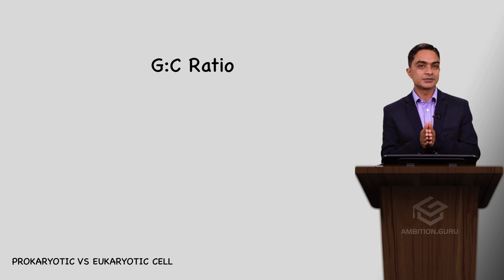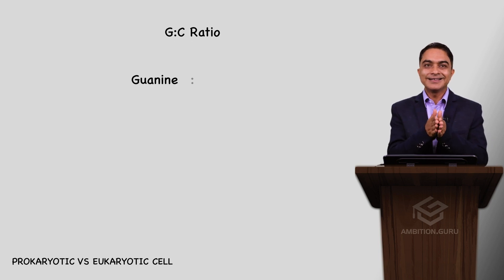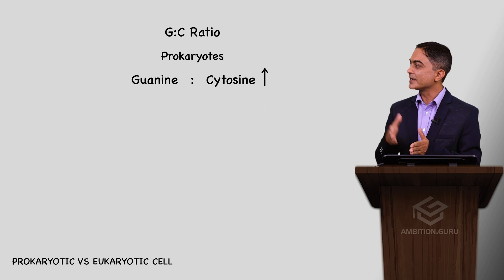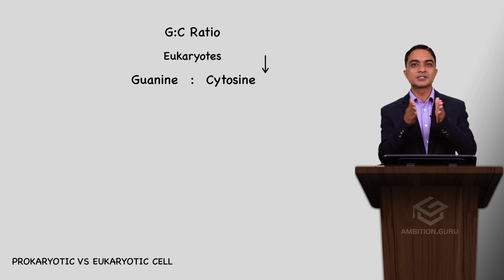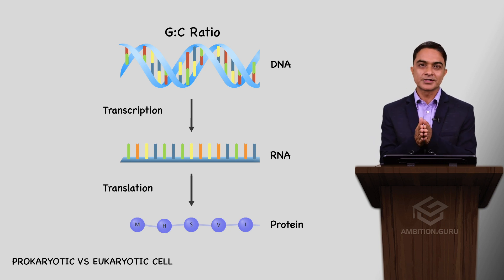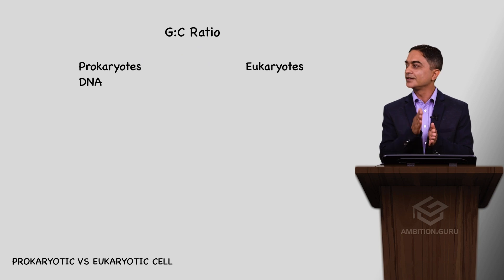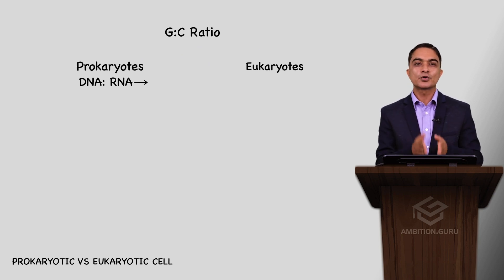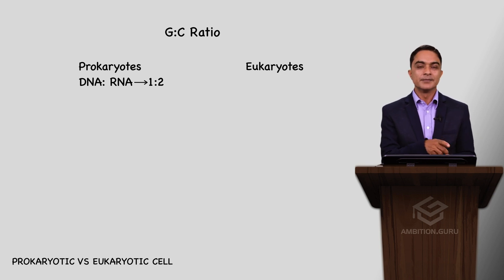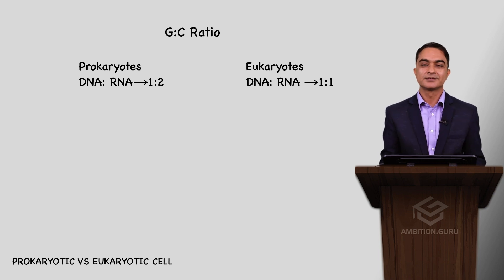Similarly, regarding the DNA:RNA ratio: in prokaryotes the DNA to RNA ratio is 1:2, meaning RNA content is relatively higher. In eukaryotes, the DNA to RNA ratio is 1:1. This difference is notable between the two cell types.